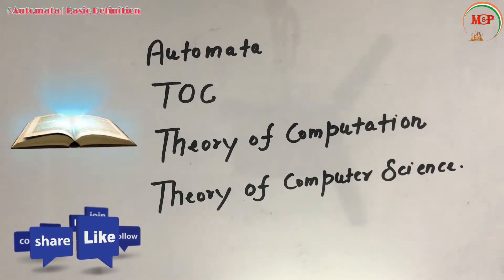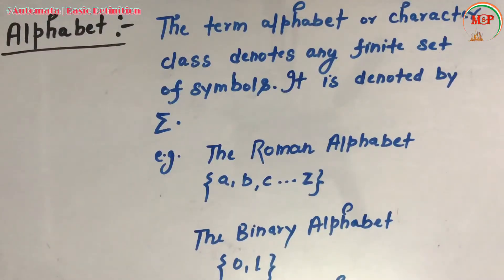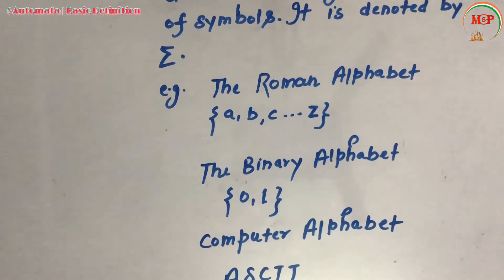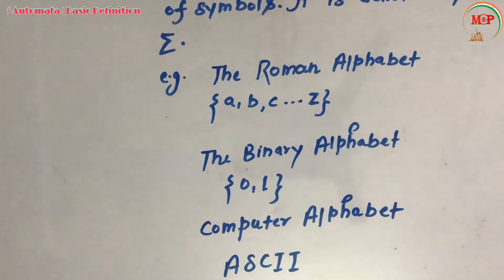The first definition is alphabet. The term alphabet or character class denotes any finite set of symbols, and it is represented by Sigma. Examples: the Roman alphabet like a, b, c till z, and the binary alphabet is either 0 or 1, and some computer alphabet like ASCII, American Standard Code for Information Interchange, are examples of the alphabet.